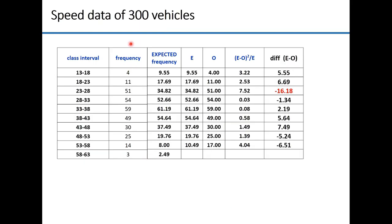For example, if you have speed data of 300 vehicles and divide it into a frequency table — which can also be made using Excel — you fit a normal distribution to this data and calculate the expected frequency E. You have observed frequency O and expected frequency E, and you calculate the chi-square value as the sum of (E − O)² / E for all classes. Note that whenever expected frequency is less than 5, those classes are merged. So if an expected frequency is 2.49, it is merged with an adjacent class to give 10.49.